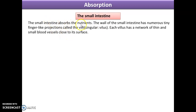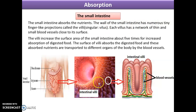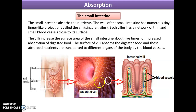After digestion, absorption of nutrients takes place in the small intestine. Inside the small intestine there are numerous tiny finger-like projections called villi. These villi increase the surface area of the small intestine about five times. Inside each villus there is a network of blood vessels which absorbs the nutrients and carries or transports them to various parts of the body.